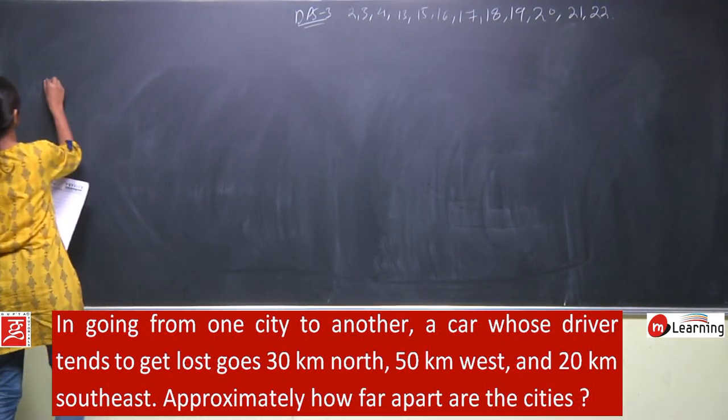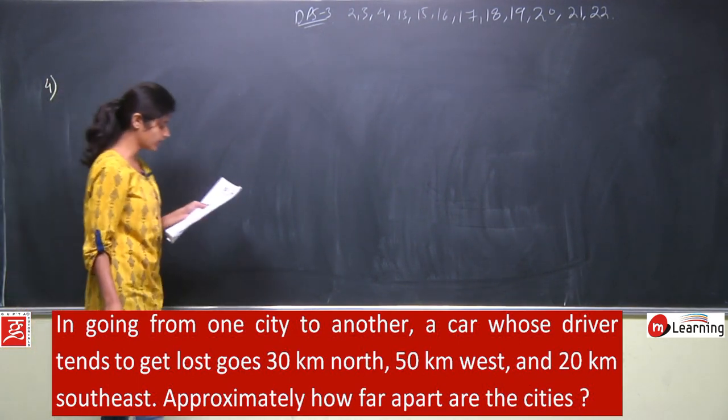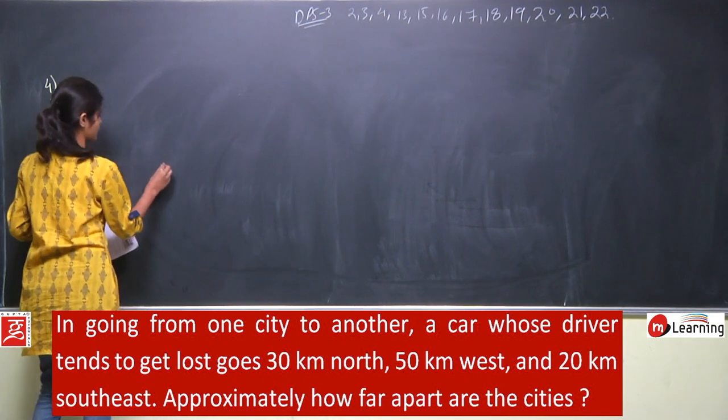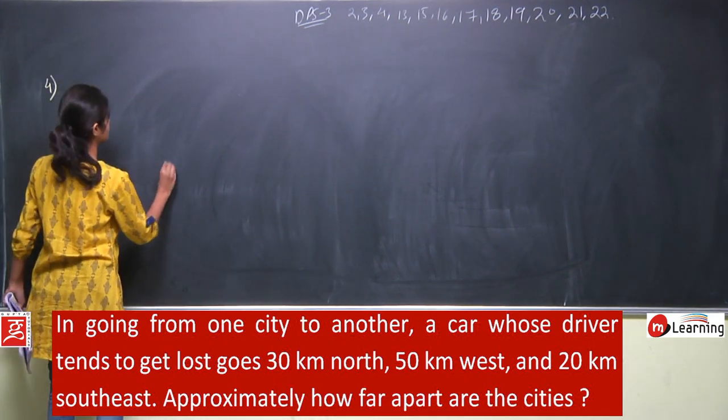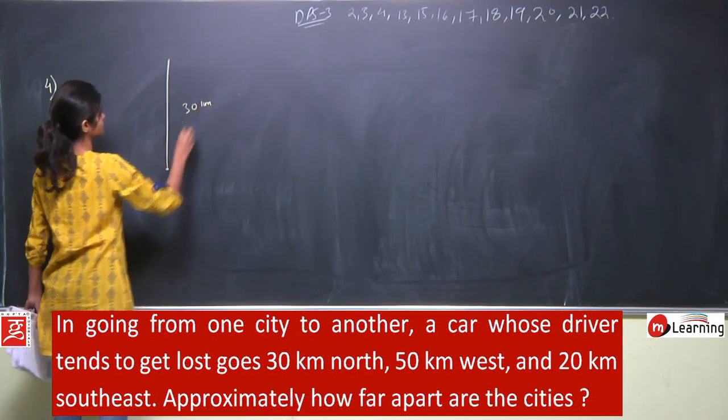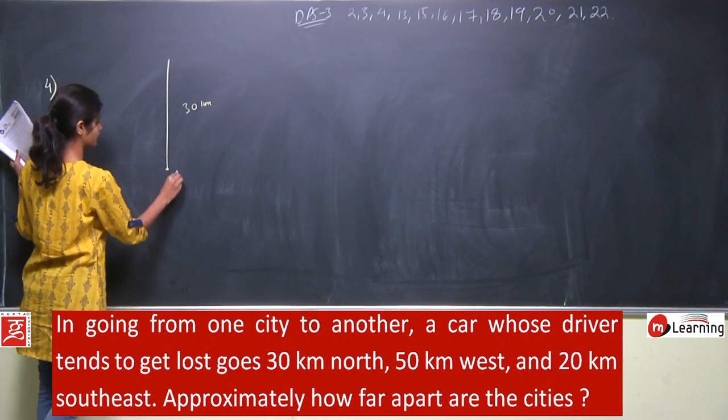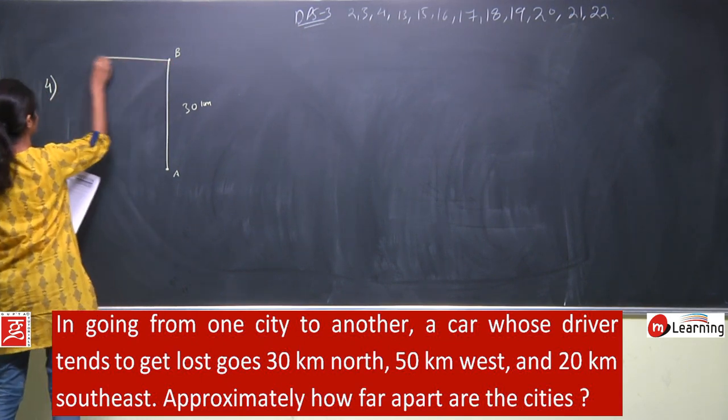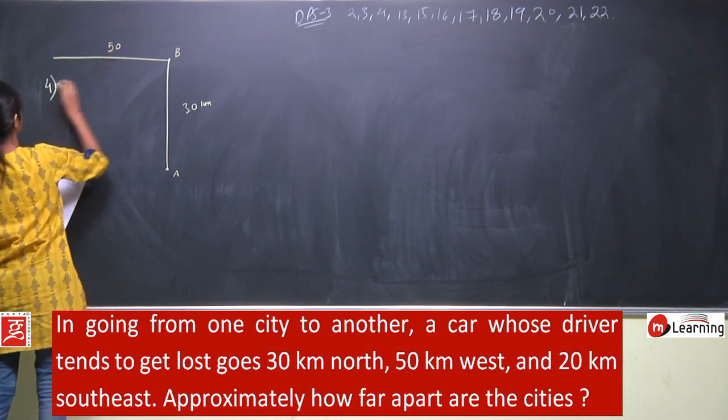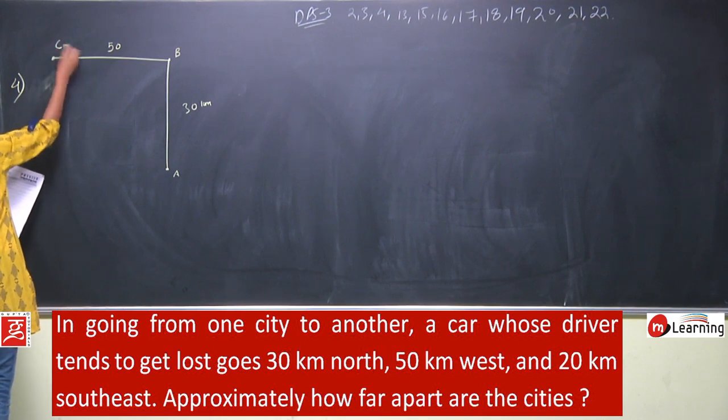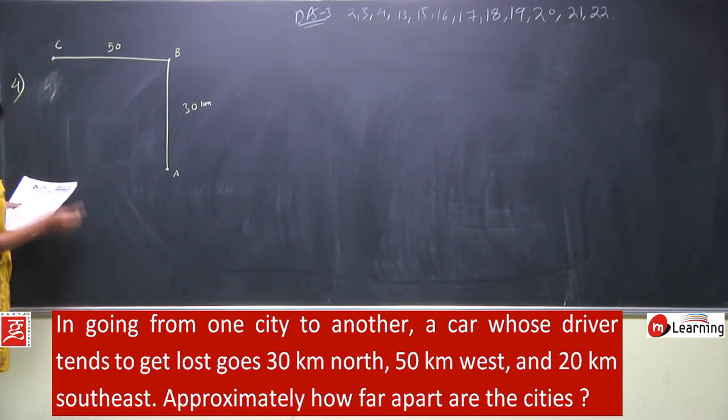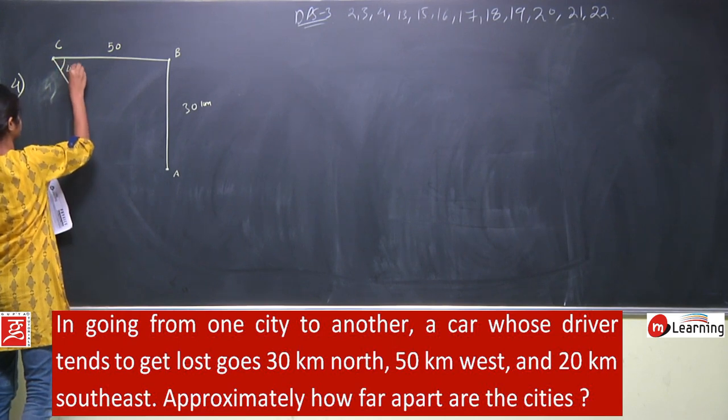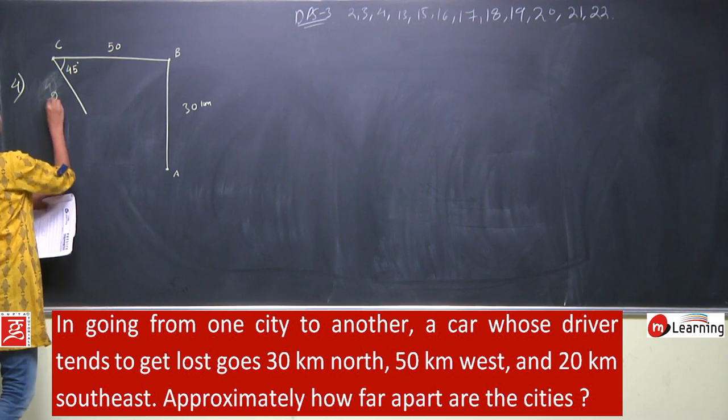Next is question number 4. In going from one city to another, a car whose driver tends to get lost goes 30 kilometer north. Suppose the driver starts from here. Then he goes 50 kilometer west. And then 20 kilometer southeast. Southeast means this direction making an angle of 45 degrees with horizontal. So from A to B north, then west B to C, and then southeast 45 degrees from C to D.